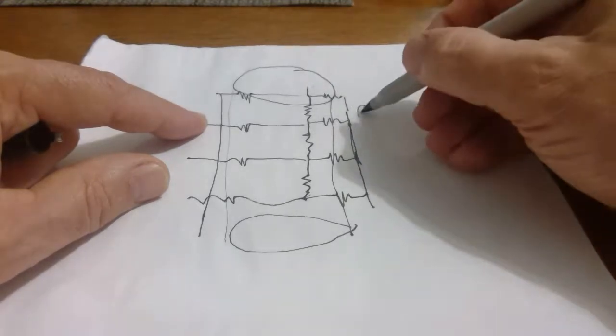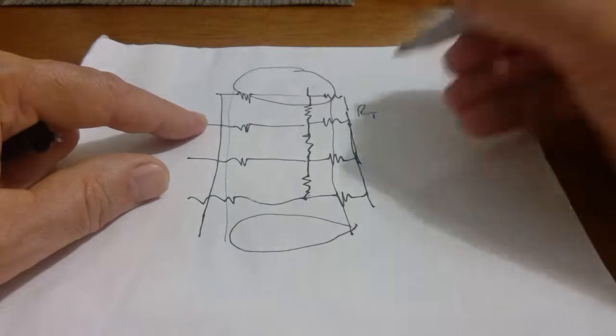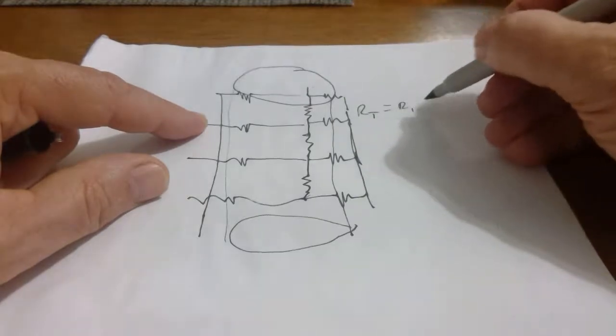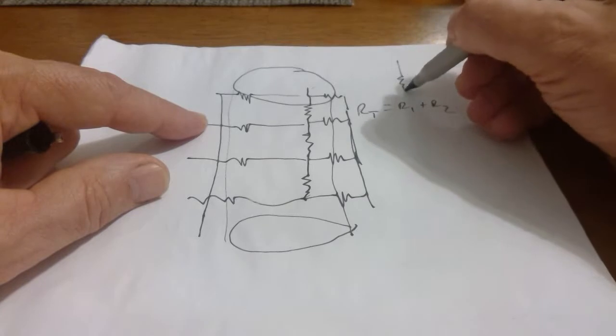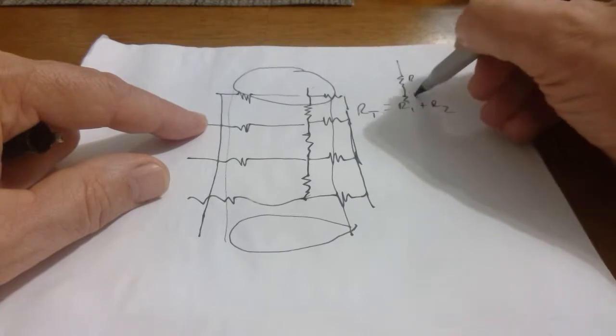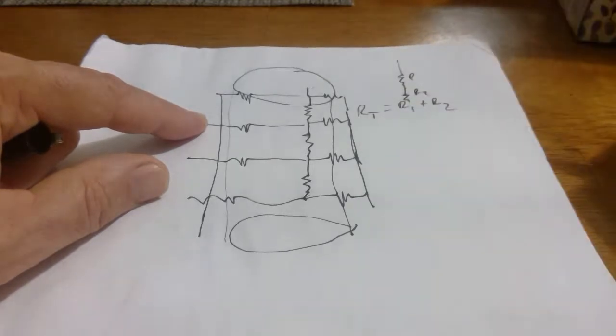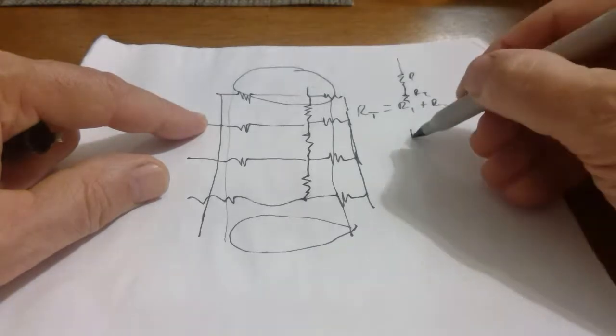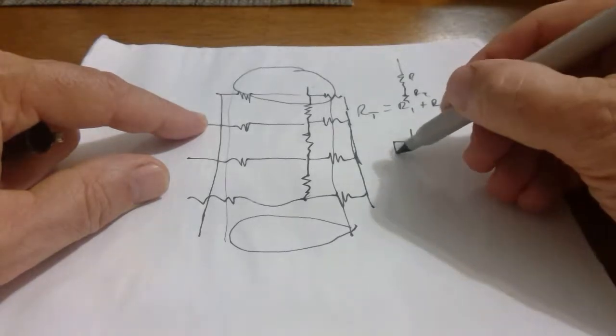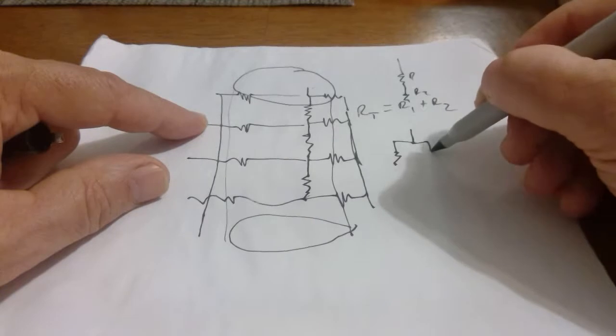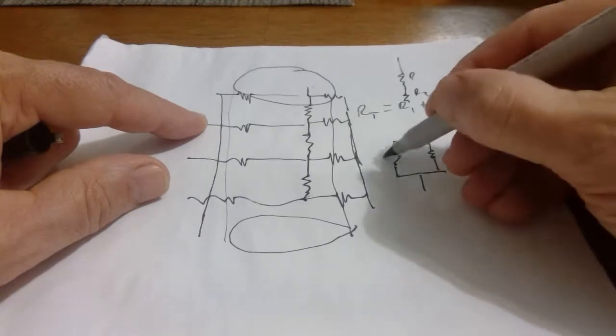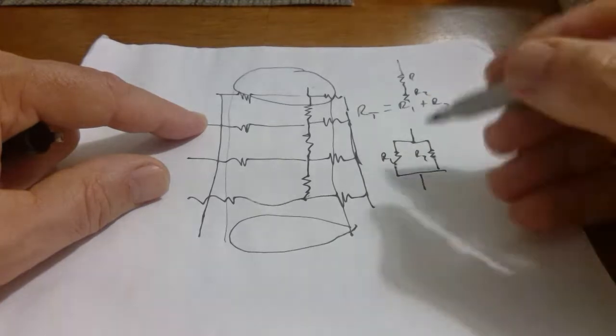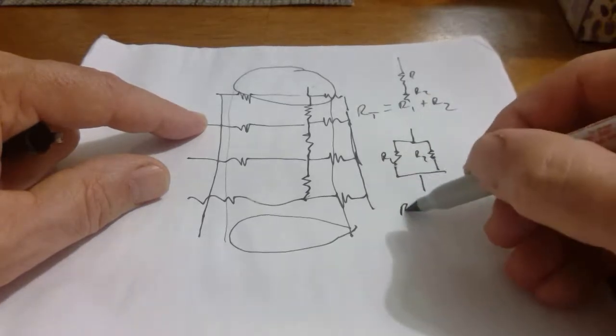And so for the series, RT, the total of it in series is just R1 plus R2, right? So that's in series when they're like that, R1, R2. When they're in parallel, like this, R1, R2, then you add them like this.